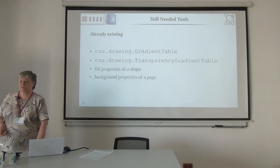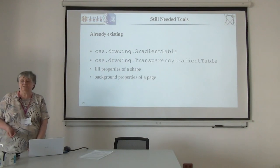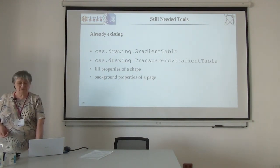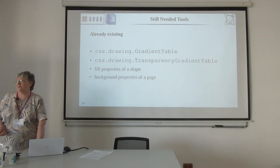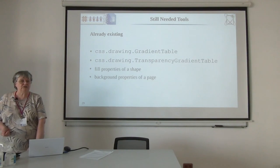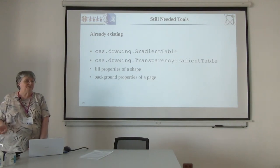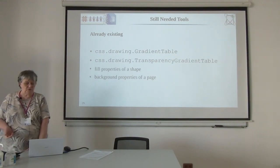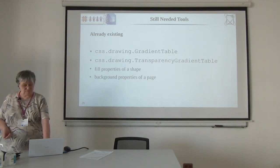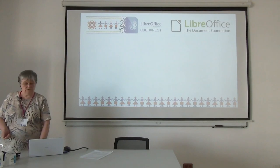So to summarize: we have gradient stops that need to be ordered. We have a ColorStop which is new, with a stop color and a stop offset, and you need some converters. What you still need is the gradient table or transparency gradient table of the document, and the fill properties of a shape or the background properties of a page.